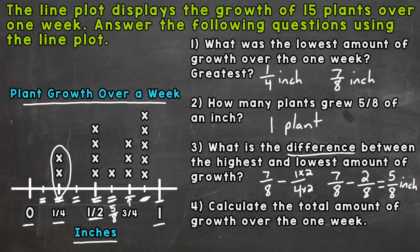Lastly, this is the most difficult problem out of the four: calculate the total amount of growth over the one week, including the growth of all 15 plants. A common mistake would be just counting up all the x's and saying 15 as the answer. But we need each plant's growth added together — we need to see how much each x is worth. Let's start with one fourth. We have two plants that grew a fourth of an inch, so that's one fourth plus one fourth, which is two fourths of an inch so far.